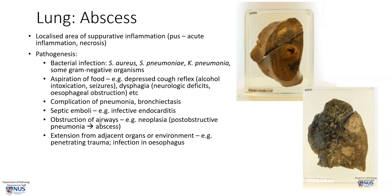Anything that gives rise to obstruction of the airways, for example a tumor, can also potentially give rise to abscess formation. Abscess can also extend directly from adjacent organs or even from the environment — for example, if there is a road traffic accident or penetrating trauma whereby the lung is exposed to the environment, or if an adjacent organ such as the esophagus has a focus of infection, this can also extend to the lung parenchyma.